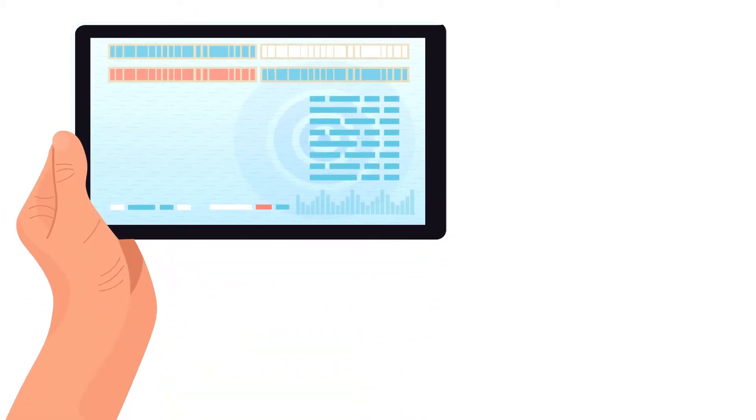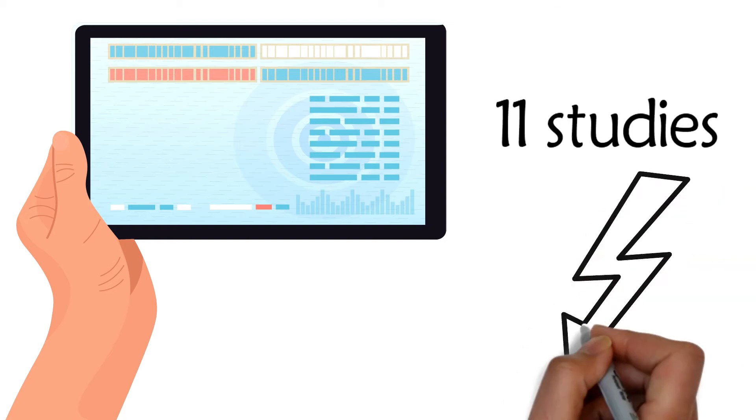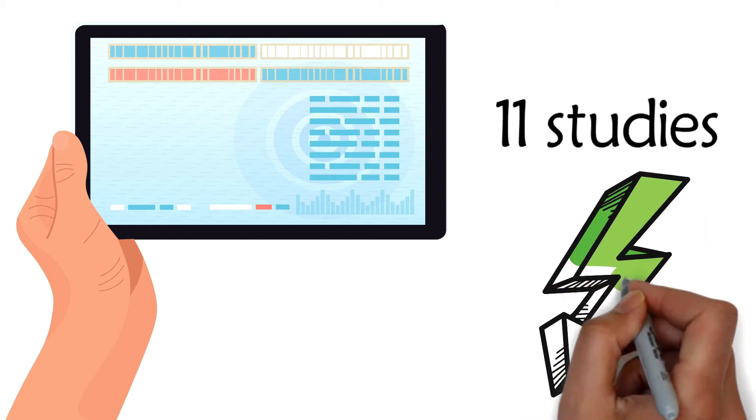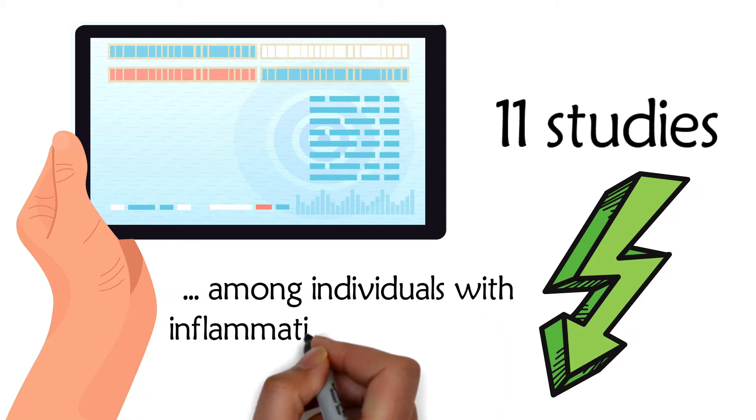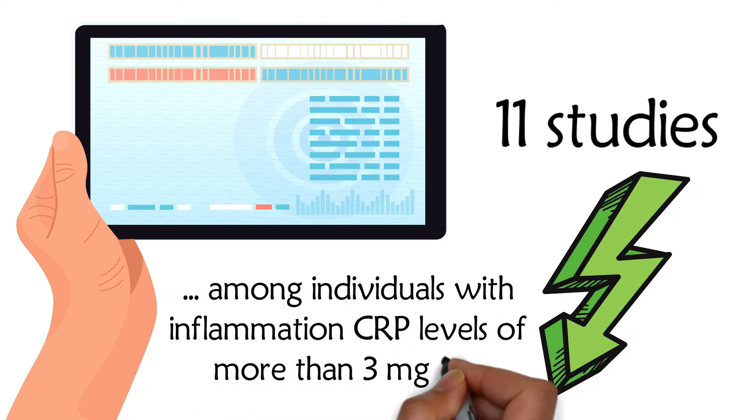The research accessed data from 11 studies. They found that magnesium supplementation reduced CRP levels among individuals with inflammation CRP levels of more than 3 mg per deciliter.